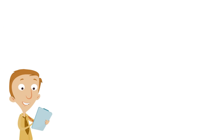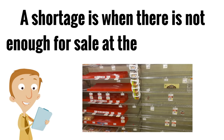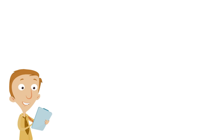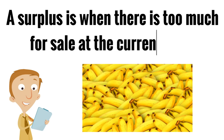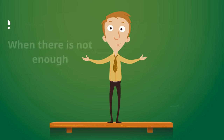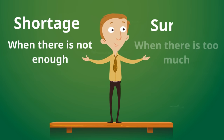To review: a shortage is when there is not enough for sale at the current price — just like the picture of the empty store shelves, that is a shortage. A surplus, however, is when there is too much for sale at the current price. Our example were the bananas that need to get sold, and it looks like there might be way too many — that is a surplus. An easy way of looking at it: a shortage is when there is not enough, and a surplus is when there is too much.